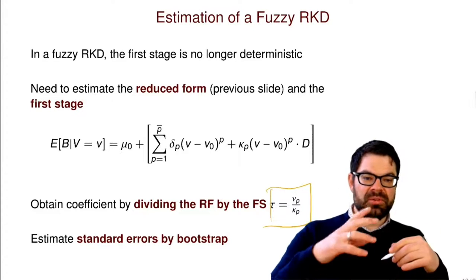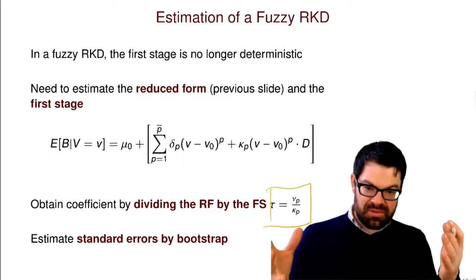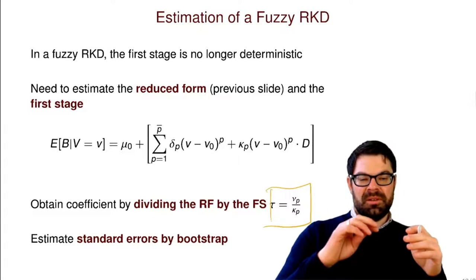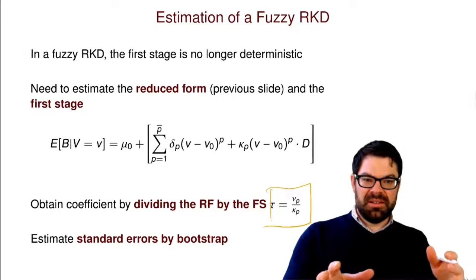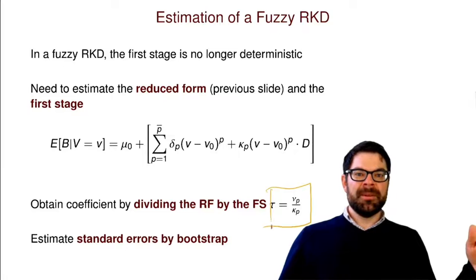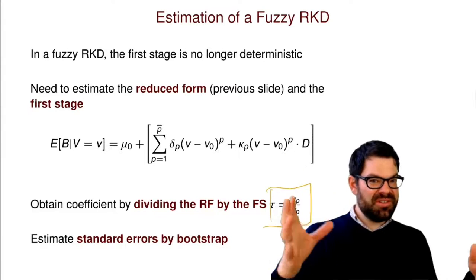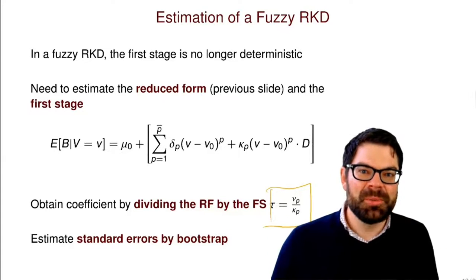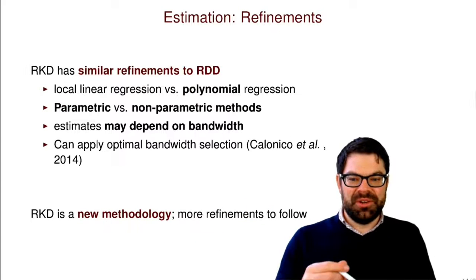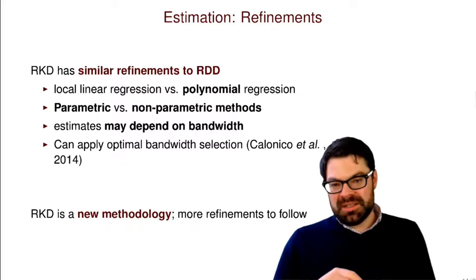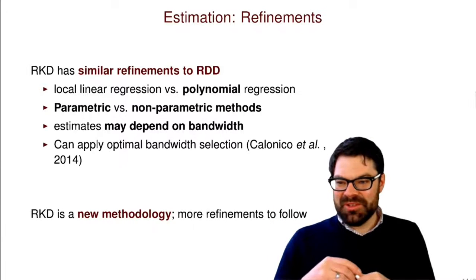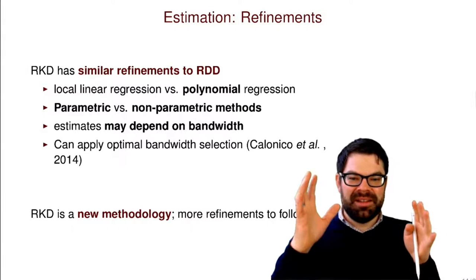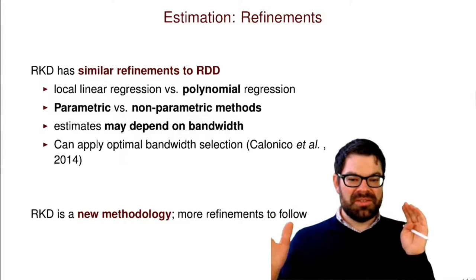The tricky thing is you can't combine everything in a single regression framework, so you need to determine your standard errors via bootstrap. When you remember that you can only do a regression kink design with lots of observations, doing standard errors with 10,000 bootstrap replications is computationally a bit difficult — not impossible, but more challenging. There are lots of refinements now about optimal bandwidth and what parametric and non-parametric methods you can use.